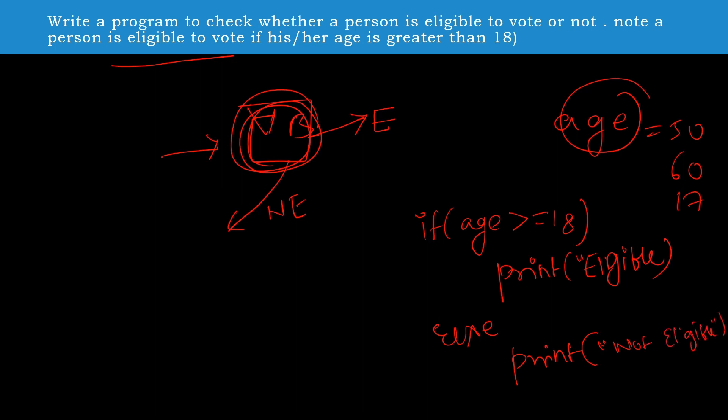It's a simple program. We just need to think: the condition is yes or no, so we are using an if condition. If the age is greater than 18, print 'eligible', else 'not eligible'. The question is over — it's very simple. Now before going to the direct program, let's learn the algorithm. Algorithm is nothing but the representation of the program in simpler English words.